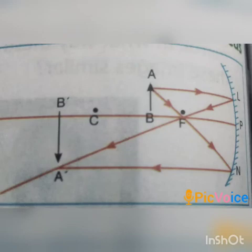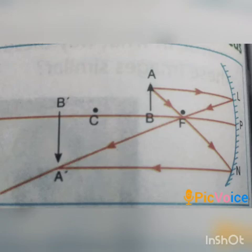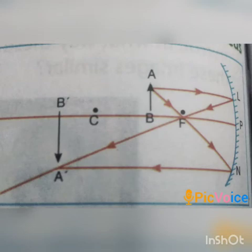The next case is when the object is between the center of curvature and the focus of the mirror. Ray AL, parallel to the principal axis, reflects through focus along LFA. Ray AN, passing through focus, reflects parallel to the principal axis. Both reflected rays meet at point A dash beyond C. The image formed in this case is real, inverted, and enlarged, formed beyond the center of curvature.